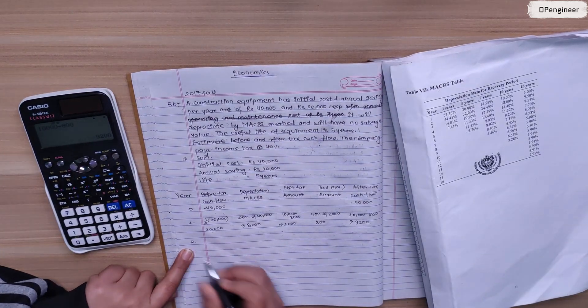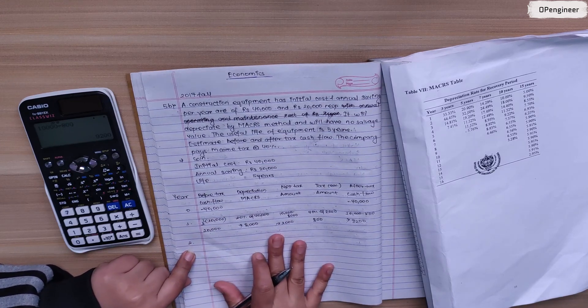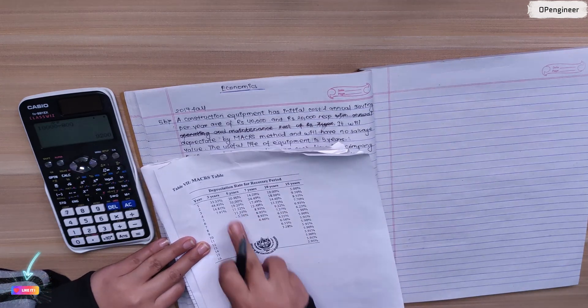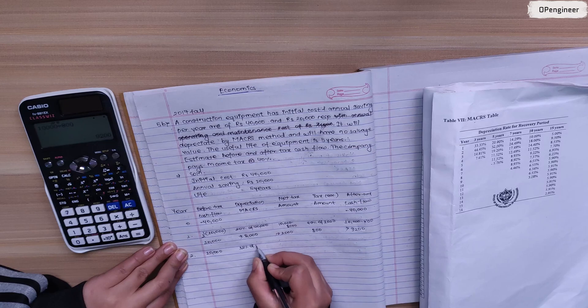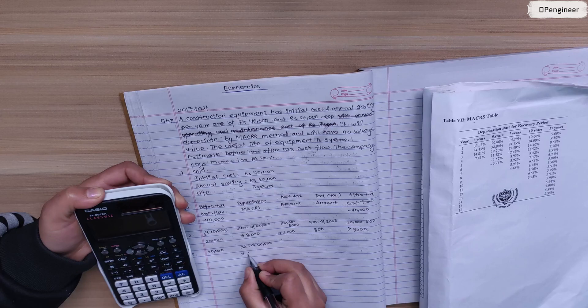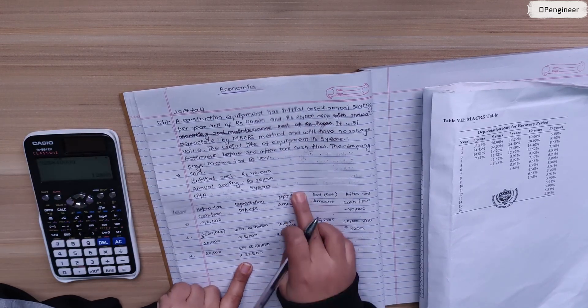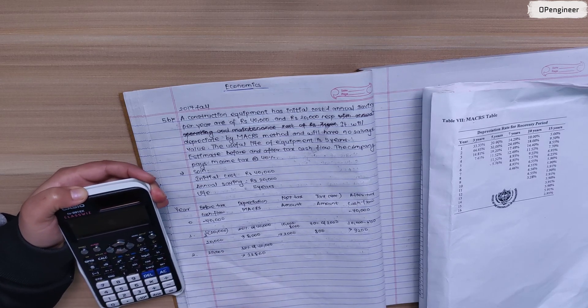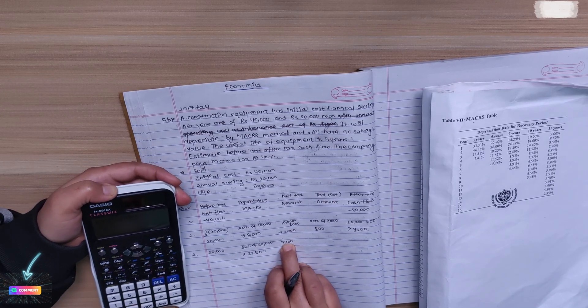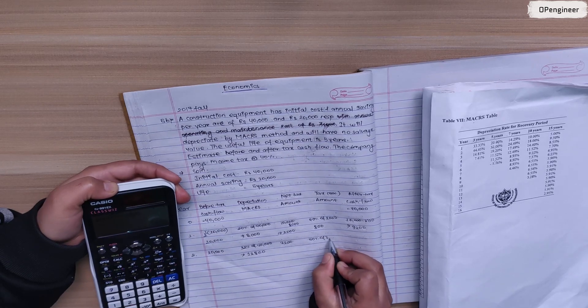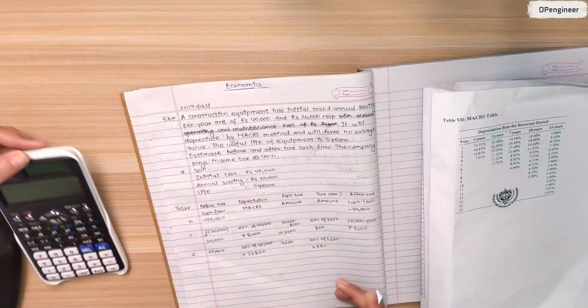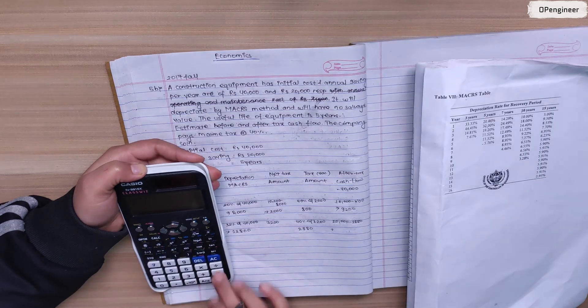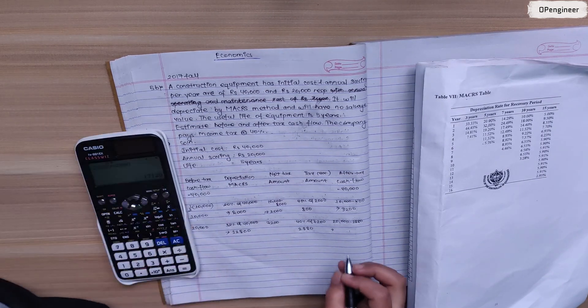Second year, annual savings is 20,000. Depreciation for second year is 32% of 40,000, which is 12,800. Net taxable amount is 20,000 minus 12,800 equals 7,200. Tax amount is 40% of 7,200 which is 2,880. After tax cash flow is 20,000 minus 2,880 equals 17,120.